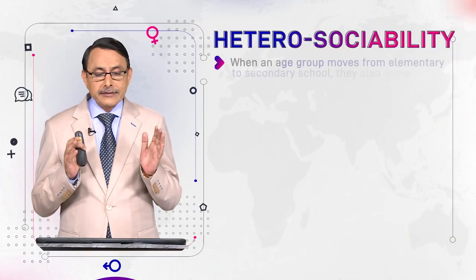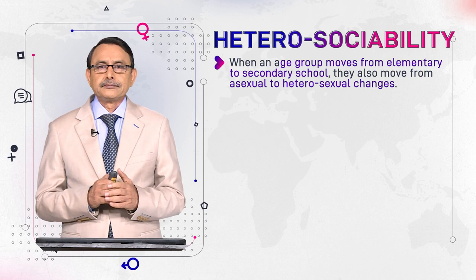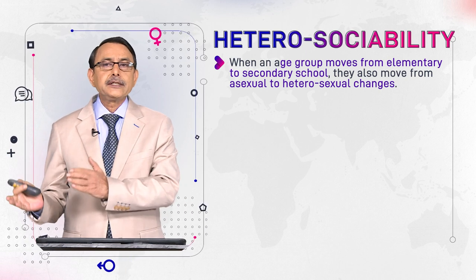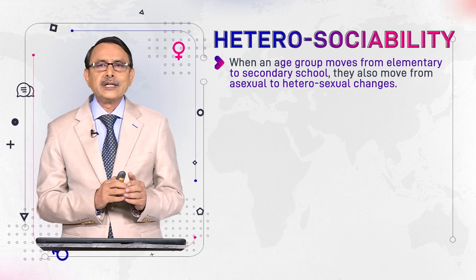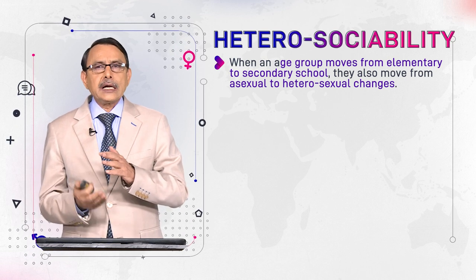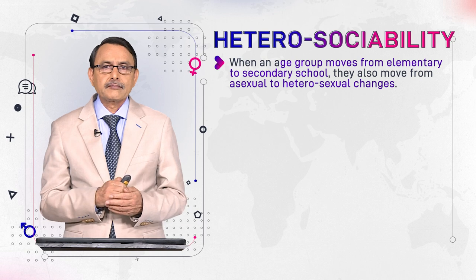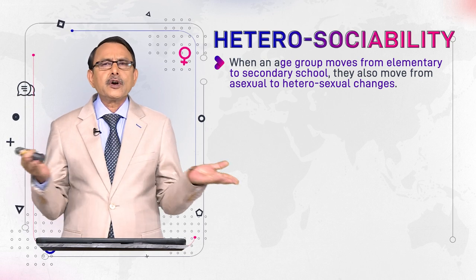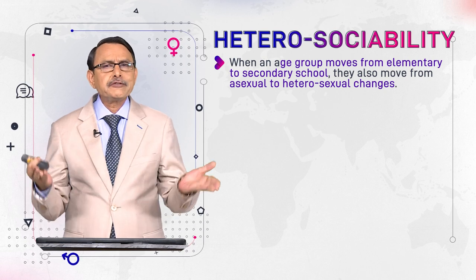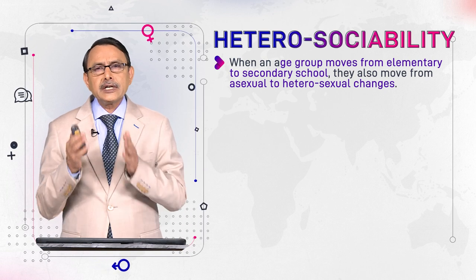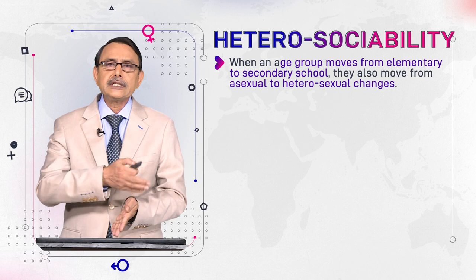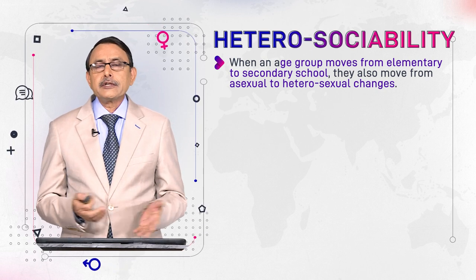This module has a link with the previous module; we can understand them together. When an age group moves from elementary to secondary, there is another parallel movement — a physical movement from asexual to heterosexual changes. In childhood we are not aware of sexual differences and physical changes, but once we enter high school and adolescence we are fully aware of physical changes in ourselves.